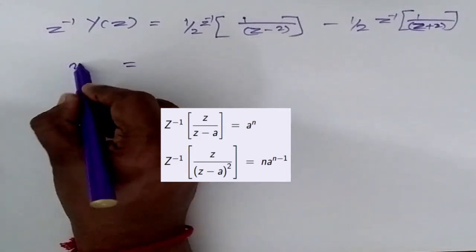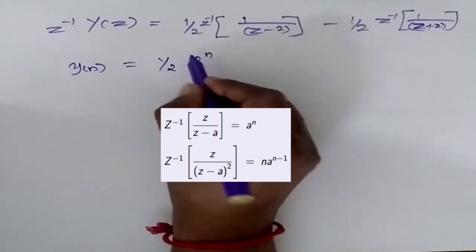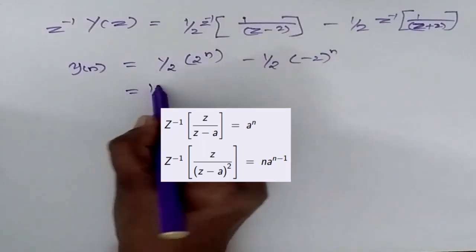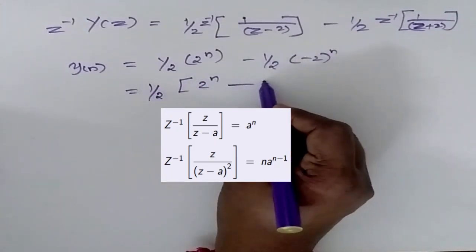So now when I apply the formula my y of N is equal to 1 by 2 into 2 power N minus 1 by 2 into minus 2 to the power N. So 1 by 2 into 2 power N minus.